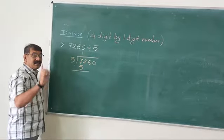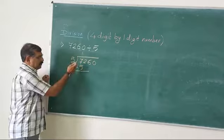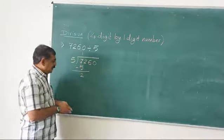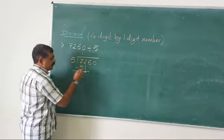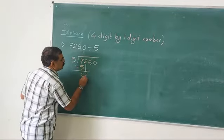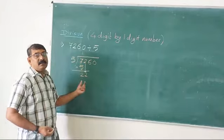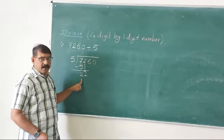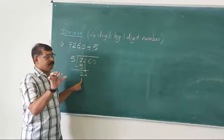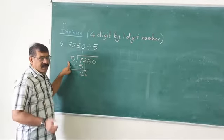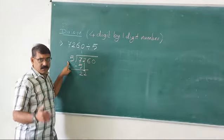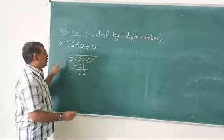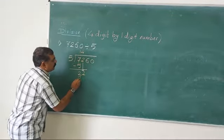Now we do the subtraction: 7 minus 5 gives us 2. Now take down the next digit. The next digit is 2, so it becomes 22. In the table of 5 we check: 5 ones are 5, 5 twos are 10, 5 threes are 15, 5 fours are 20, 5 fives are 25. 25 is bigger than 22, so we go one step back — 5 fours are 20. I will write 4 here and it becomes 20.